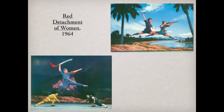Jiang Qing set to work creating 'model works' — art that was absolutely ideologically pure, showing China exactly the kind of message required. One truly remarkable piece was a ballet by the Beijing Ballet Company, 'Red Detachment of Women,' which told the story of young revolutionaries fighting against the evil Japanese and Nationalists with intense vigor. The Chinese had been trained in ballet by the Russians, but took it to a new heightened athletic level — higher leaps, broader jumps — infused with revolutionary zeal.